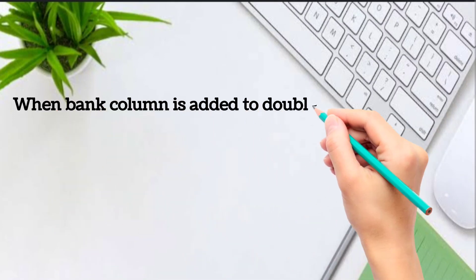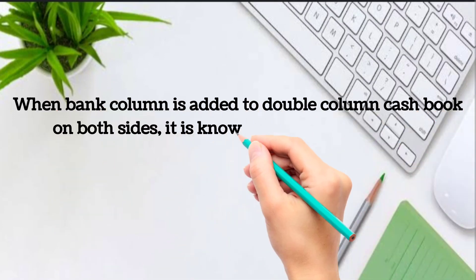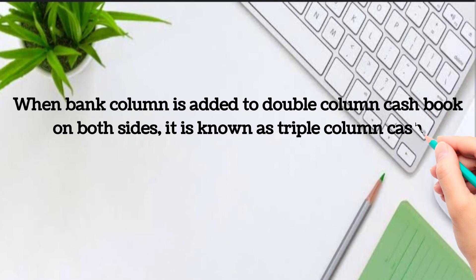In the triple column cash book, one more column — that is bank — is added to the double column cash book on both sides. This column is included to record all the transactions that are related to bank.